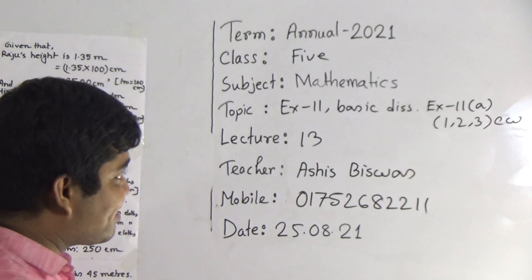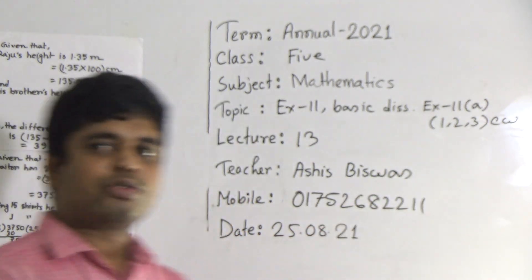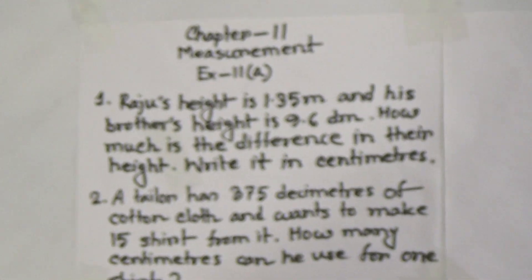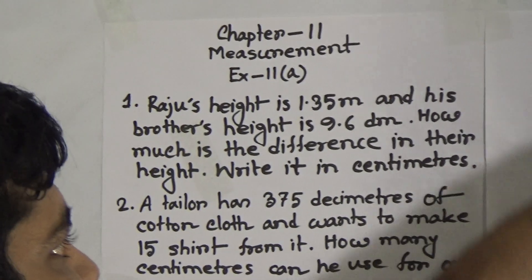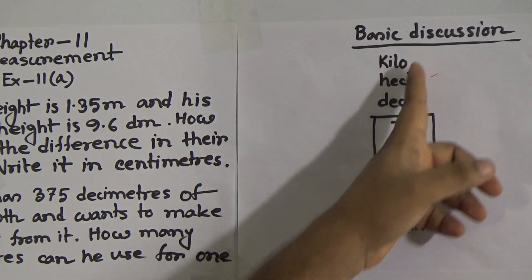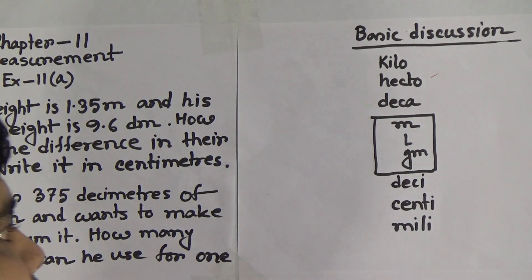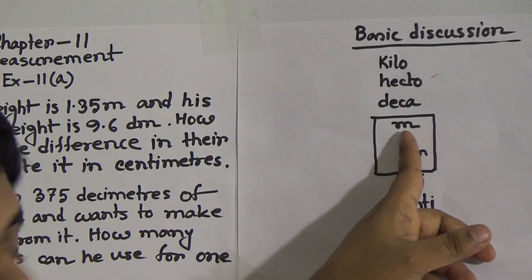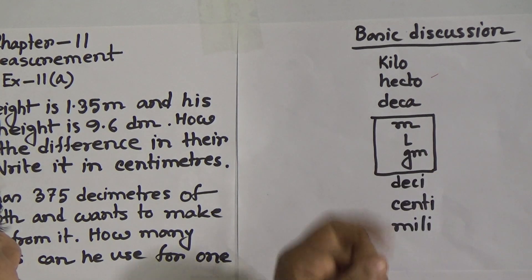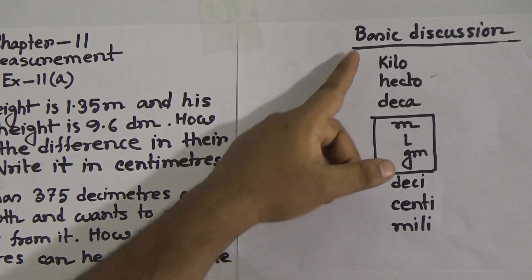From this chapter we shall do a basic discussion, and from Exercise 11A we shall solve three problems: 1, 2, and 3 as your classwork. Now, here is a chart: kilo, hecto, deca, meter, liter, gram, deci, centi, milli. Meter is the unit used to measure distance, liter is the unit used to measure liquids, and gram is the unit used to measure the weight of any solid.